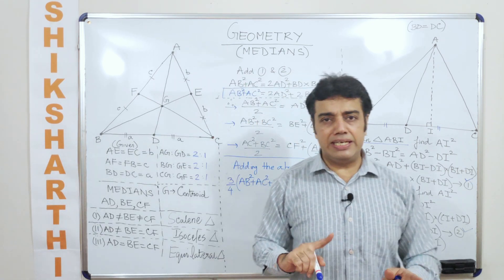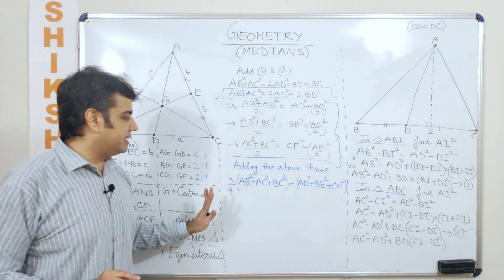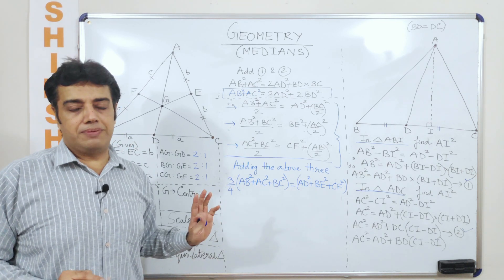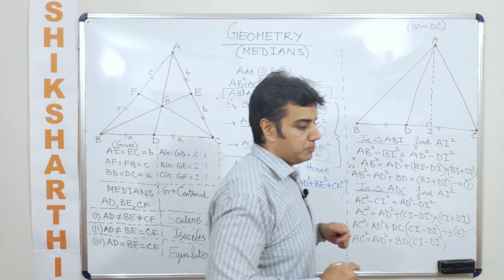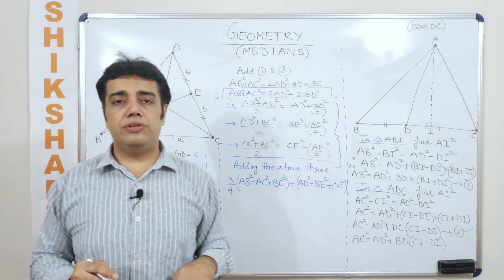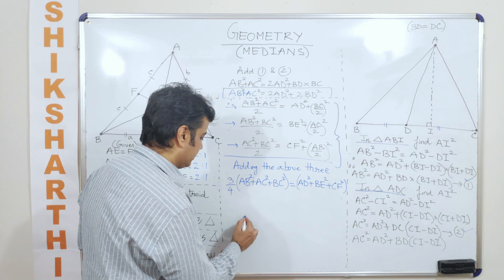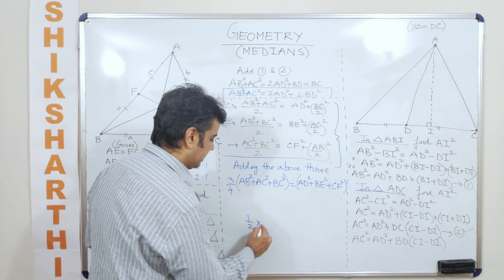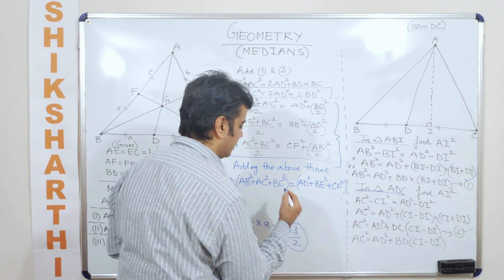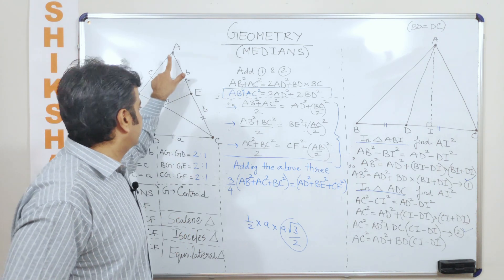Now let us integrate this with the discussion on height. If I were to find out the heights, I can find them here as well. Let us take the special case of an equilateral triangle. Inside an equilateral triangle, the area equals (1/2) × base × height. This gives us the height of the equilateral triangle.